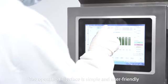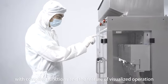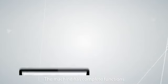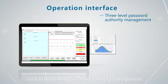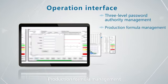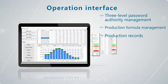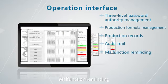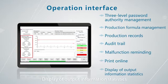The operation interface is simple and user-friendly with complete functions and a feature of visualized operation. The machine includes three-level password authority management, production formula management, production records, audit trail, malfunction reminding, print online, and display of output information statistics.